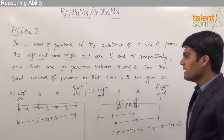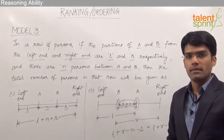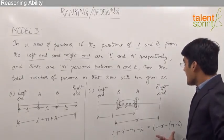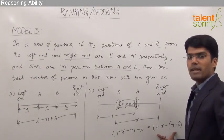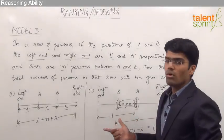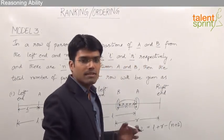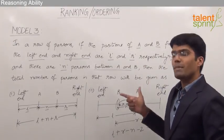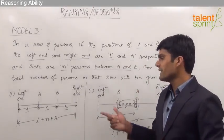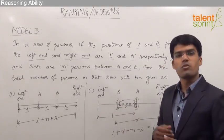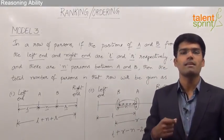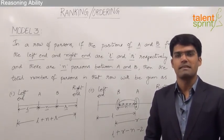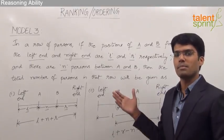So we have two possible answers for Model 3: the first answer is L plus N plus R, and the second answer is L plus R minus (N plus 2). To determine the correct answer in an exam, calculate both possible answers and whichever is available in the options is the correct one. Otherwise, the answer would be 'cannot be determined.' Let us now take an example based on this.